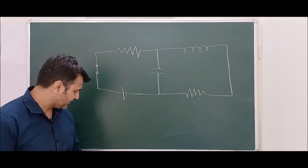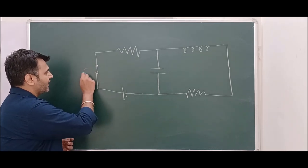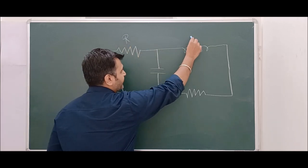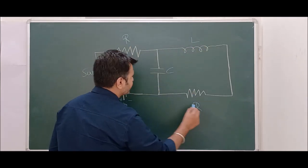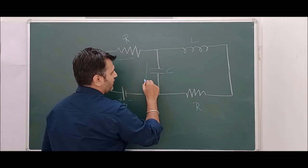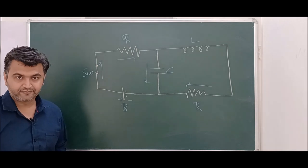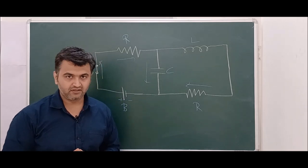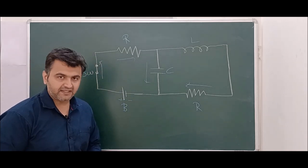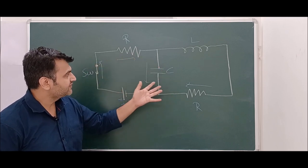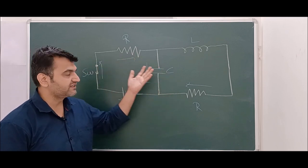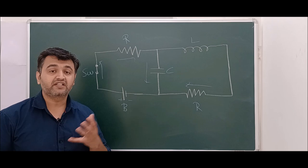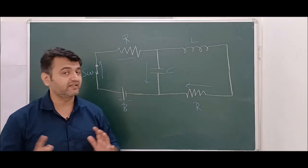I have drawn one simple electrical circuit. Here is the switch, here is the battery with plus and minus, here is the resistor, here is the inductor, here is the capacitor, again the resistor, and the current is flowing through the circuit. This is how a typical electric circuit looks. An electric circuit consists of electric components like resistors, inductors, and capacitors, which are connected through conductive wires through which the electric current flows.